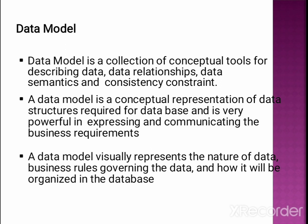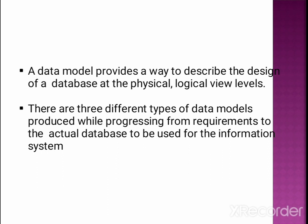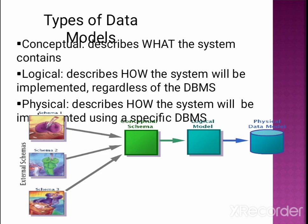Data Model is a collection of conceptual tools for describing data structures and is powerful in expressing and communicating business requirements, and visualizing the nature of data. It describes the design of physical and logical views. There are three types: Conceptual — deals with what the system contains; Logical — deals with how the system will be implemented; Physical — deals with how the system will be implemented using a specific DBMS.